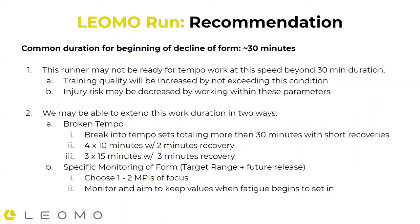The other way to extend the breakdown duration is to have specific in-session monitoring of form and feedback. If you've seen our previous webinars, we've talked a lot about our target range feature — a future release, hopefully coming soon, starting at least with the cycling application. This allows you to set a motion target and create a range for where you want to be with your MPI data, and then it provides live feedback of when you're falling out of that range. Choose one or two MPIs to focus on, monitor them during the activity, and see if you're starting to fall off in certain areas.